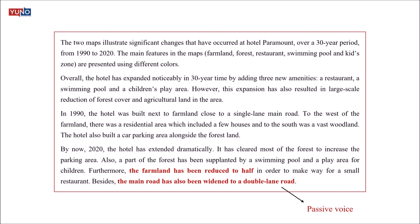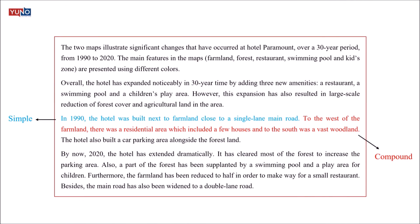Finally, use a wide range of grammatical structures correctly, because the examiner looks at your grammatical range and accuracy. For the map task, pay special attention to tenses as well as active and passive voice. For example, 'the farmland has been reduced to half' and 'the main road has also been widened' are written in passive form because we don't know who reduced the farmland or who widened the road. Along with this, you should use a mix of simple, compound, and complex sentences — the more you are able to use complex grammatical structures, the better your score will be, of course if they are accurate.